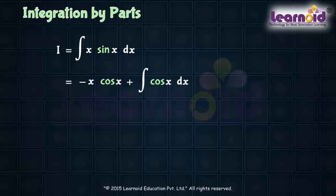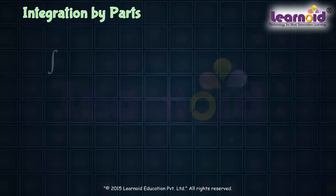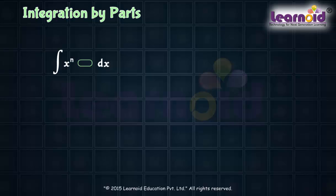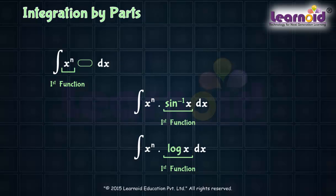So final integral is I equals minus x cos x plus sin x plus c. Usually if any function is a power of x or a polynomial in x then take it as first function. In case where other function is inverse trigonometric function or logarithmic function then take them as first function.